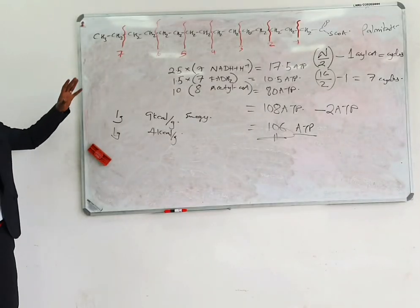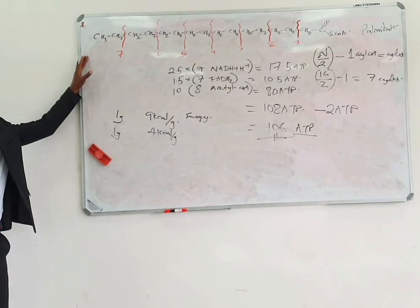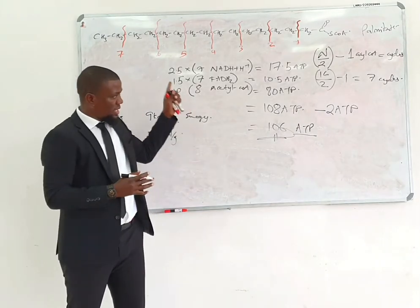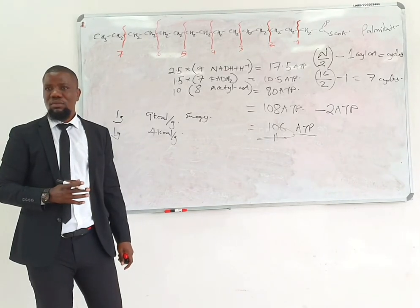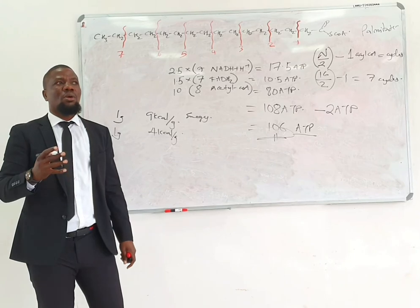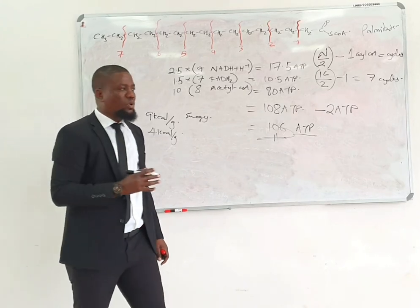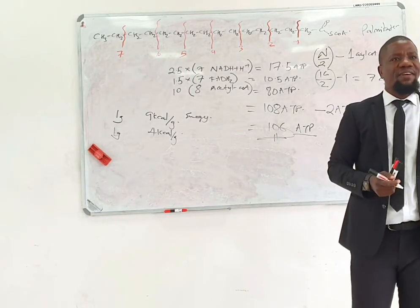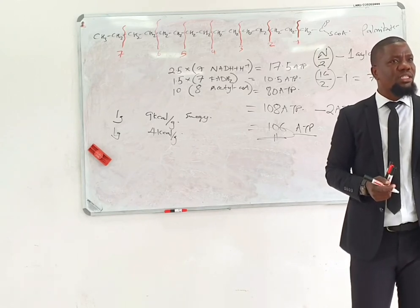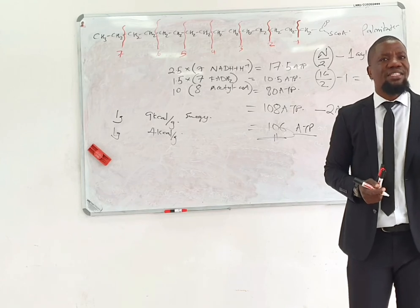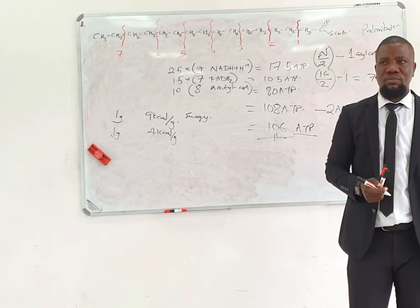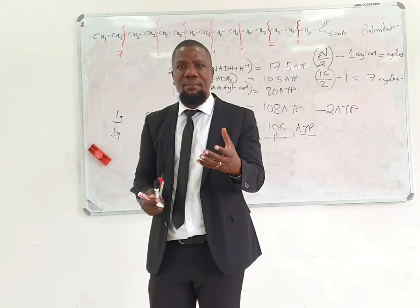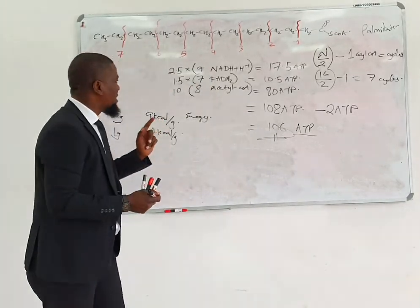This is how a fatty acid with an even number of carbons undergoes beta oxidation. One question that would be asked is: why does a fatty acid with an even number of carbons give you more energy than a fatty acid with an odd number of carbons? One gram of protein and one gram of carbohydrate give you 4 kilocalories per gram, while fatty acids give 9 kcal/g because they are highly anhydrous and highly reduced.